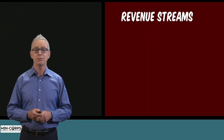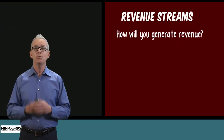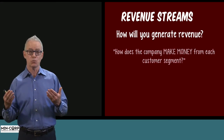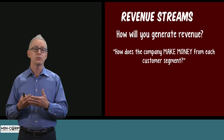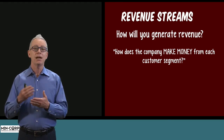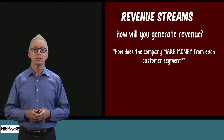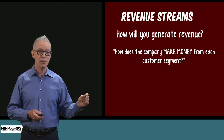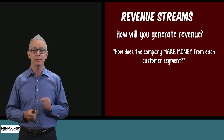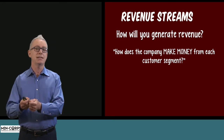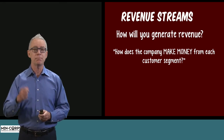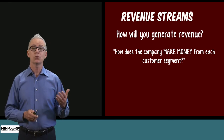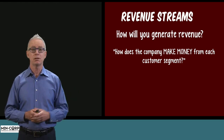Then in building block five: how will we make money? Assuming we have the value proposition customers want, we're reaching them effectively through our channels, and we have a relationship management strategy that's working — how do we make money? This isn't initially how much they pay; this is how will they pay. For example, are you selling an asset — an asset sale where they actually buy the product from you? Or will you need a model where they rent or lease the product or service on a monthly basis?